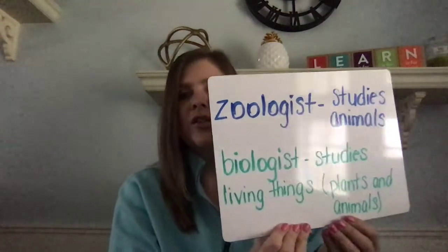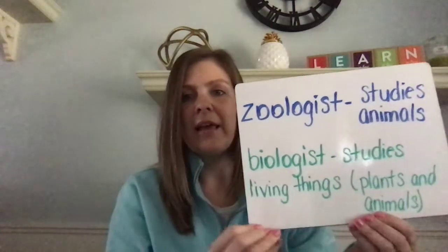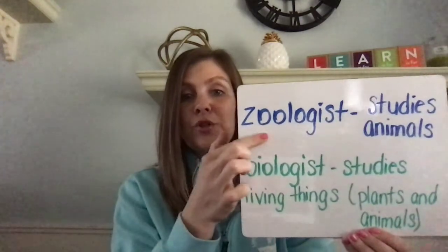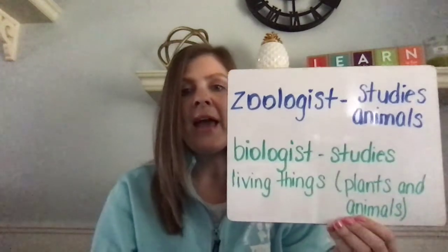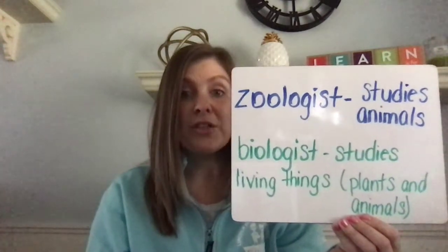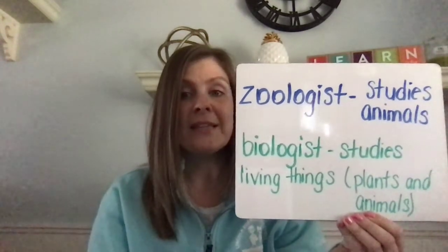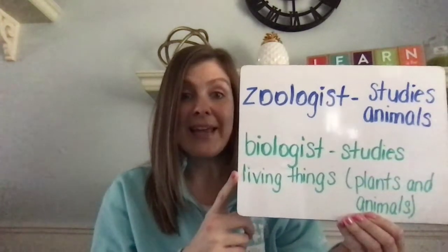Over the next few videos, I'm going to be talking to you about life science. Life science is the study of living organisms, including plants and animals. If you hang out with me on these videos, you are actually going to become zoologists — studying animals; you can kind of see the word zoo in there. You're also going to be biologists, studying living things like plants and animals.